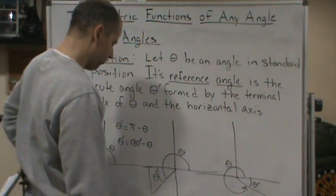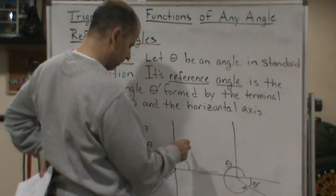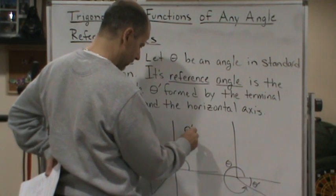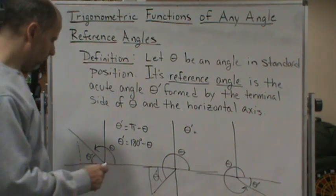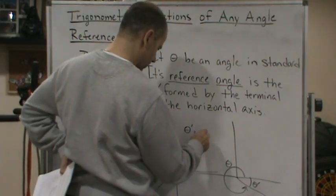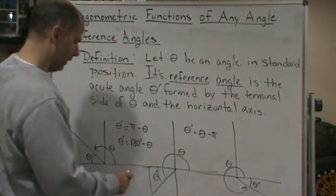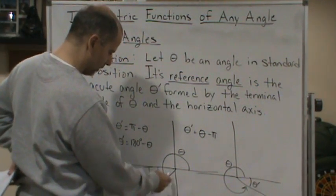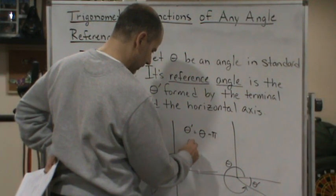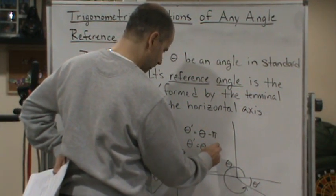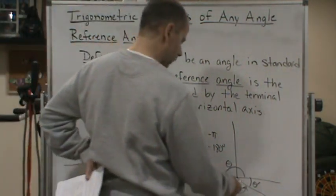In the third quadrant, it's similar. To find θ', it would be θ minus π because θ is larger. We take θ and subtract off π, which is 180 degrees. We could write this as θ minus 180 degrees.